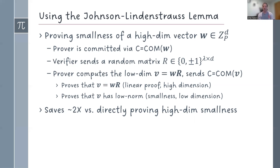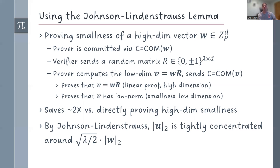So what we get is roughly a factor of 2x improvement versus a high dimensional smallness proof. Why does that prove anything about what we wanted? Well, by Johnson-Lindenstrauss, the L2 norm of v is tightly concentrated around the L2 norm of w times some factor that depends on the security parameter. So if you have a bound on the size of v, you get a bound on the size of w with a very, very small gap.